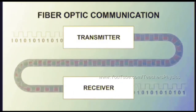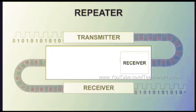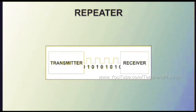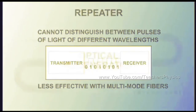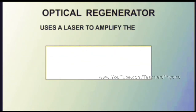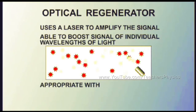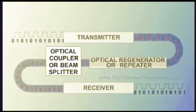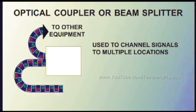Quality transmitters and receivers work together to ensure less signal degradation across the network. However, long-distance applications also require the use of either repeaters or optical regenerators to boost the light signal. A repeater converts the light signal back into an electrical signal and then regenerates a new optical signal, but cannot distinguish between pulses of different wavelengths and is less effective with multimode fibers. An optical regenerator uses a laser to optically amplify the signal; it can boost the strength of individual wavelengths and is appropriate for either single-mode or multimode fibers. An optical coupler or beam splitter may also be added to channel signals to multiple locations.